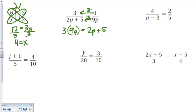Okay? So if I choose to do it that way, 9 times 3 is 27p equals 2p plus 5. Subtract 2p because they're like terms. And then I have 25p equals 5. Okay? Divide by 25.